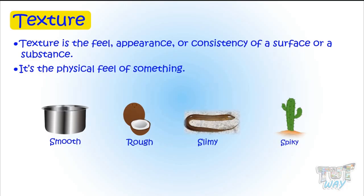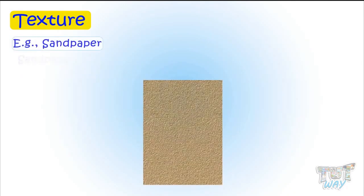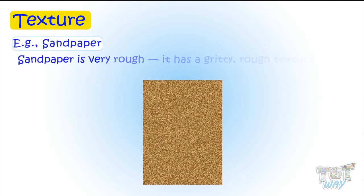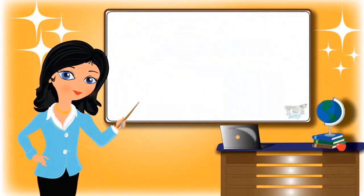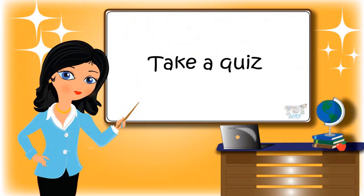For example, sandpaper is very rough — it has a gritty, rough texture. So friends, today we learned some properties of matter. Now you may go ahead and take a quiz to learn more. Bye-bye!